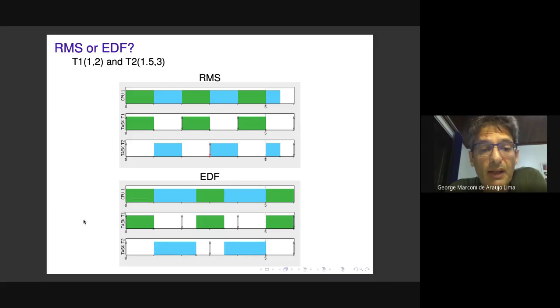EDF, on the other hand, manages this example easily. The first instance of task two has higher priority than the second instance of task one, delaying its execution. There are no missed deadlines and the processor is fully utilized.